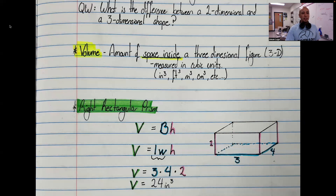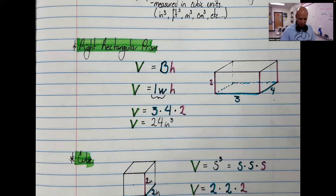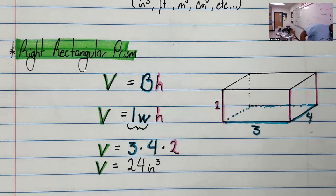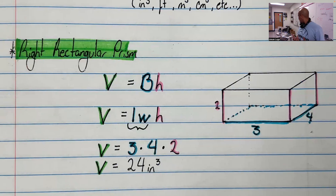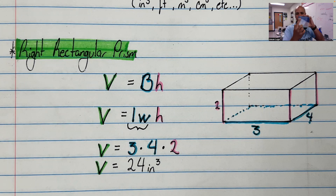If we're going to get the volume of a right rectangular prism — here I have a drawing of one — a right rectangular prism is actually a very common shape in our world because it's basically the shape of a box or the shape of a book. This is a right rectangular prism. Notice that a right rectangular prism is basically a whole bunch of rectangles, and every single angle you see is a right angle.